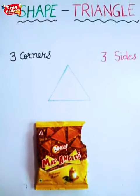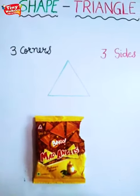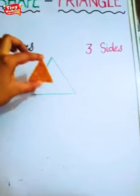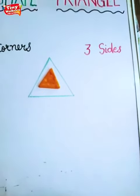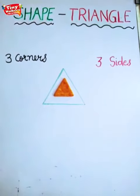Do you remember what are these? Yes, these are bingo mad angles. Now, do you ever think about its shape? What shape is it? Yes, it is triangle.